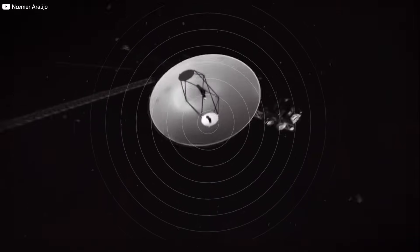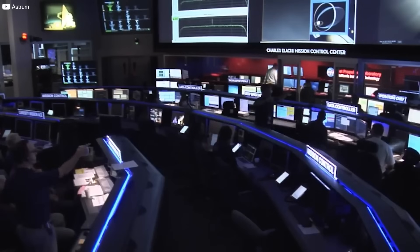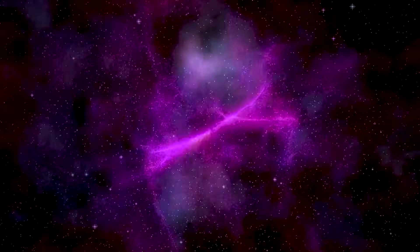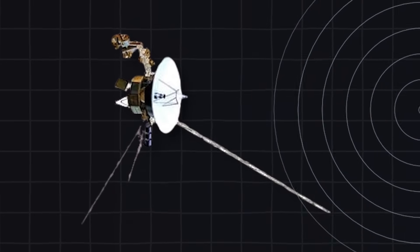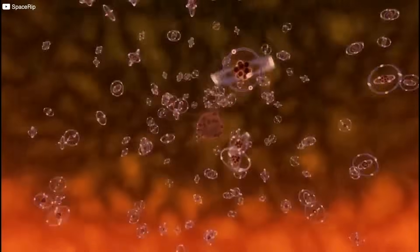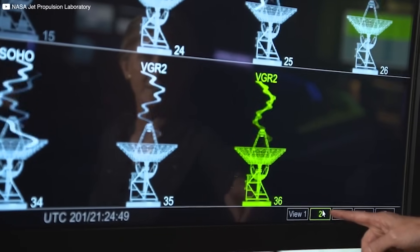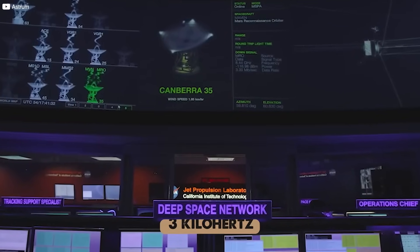Voyager 1's detection of this steady, low-level hum from the interstellar plasma offers a new window into the vast, dynamic environment beyond our solar system, revealing it as anything but silent. The hum detected by Voyager 1 isn't sound in the traditional sense. It's not something you could hear with your ears. Instead, it's a measurement of electron-plasma oscillations, the vibrations of electrons in the interstellar plasma at a very specific low frequency, around 3 kHz.